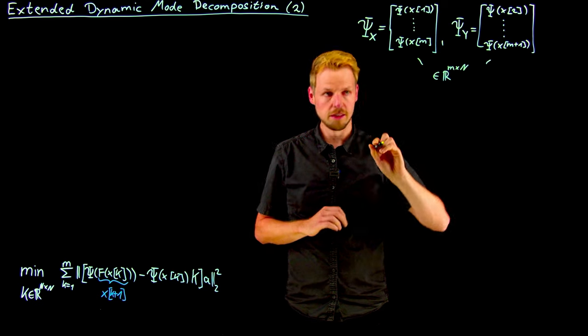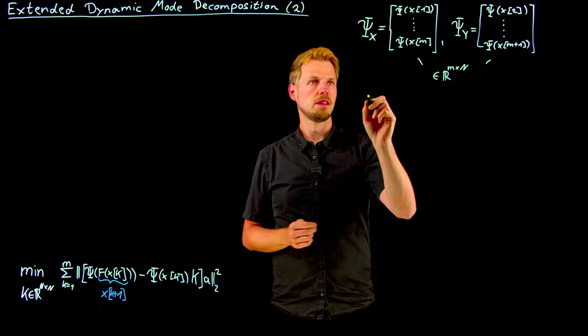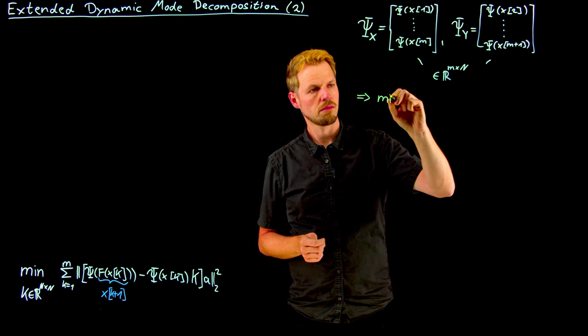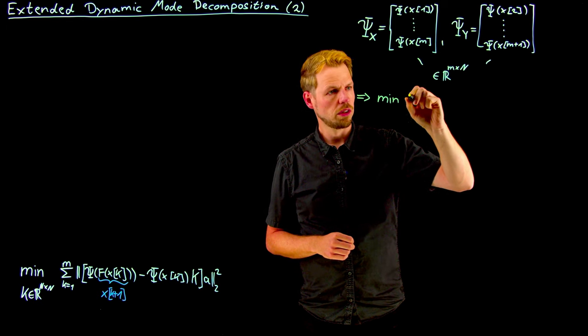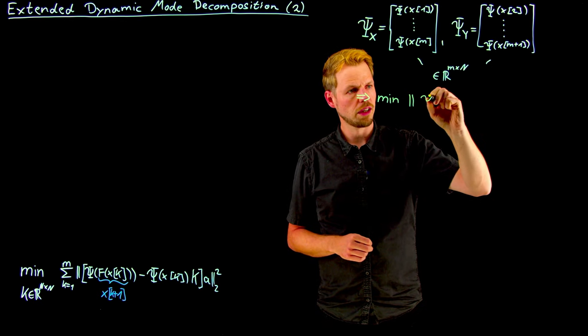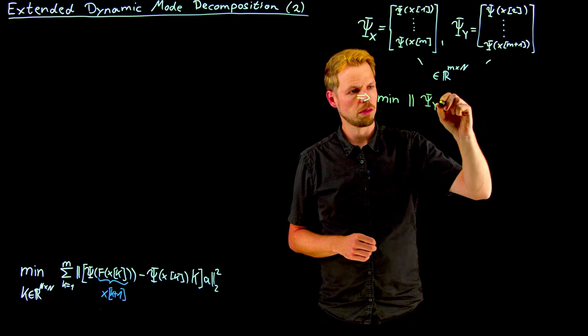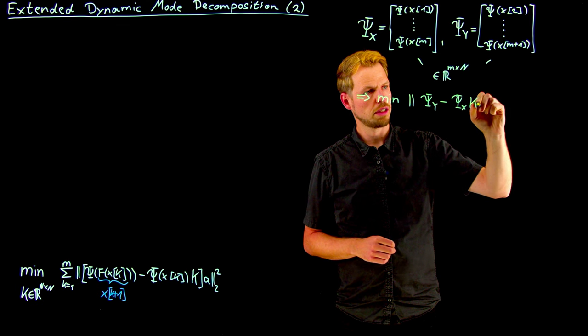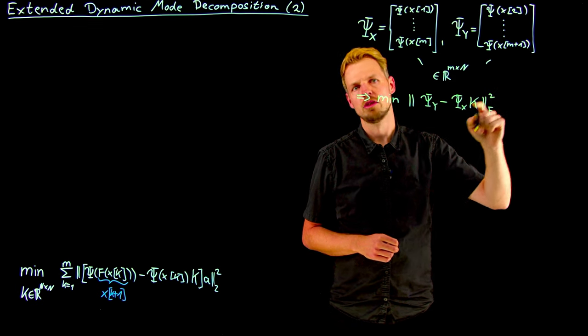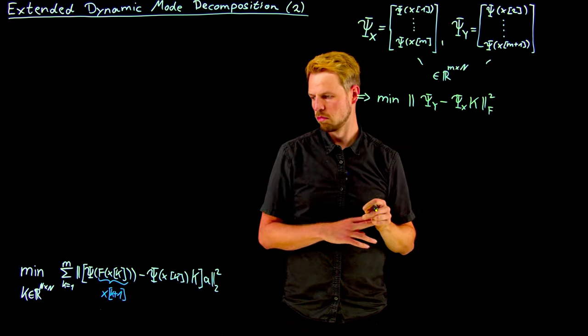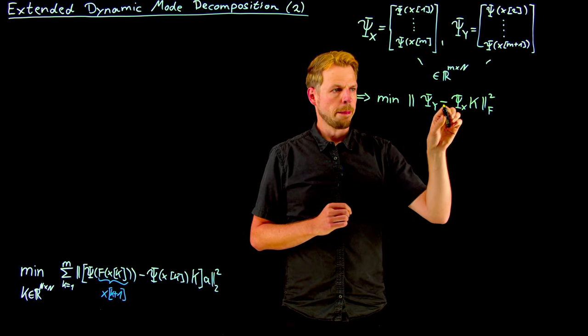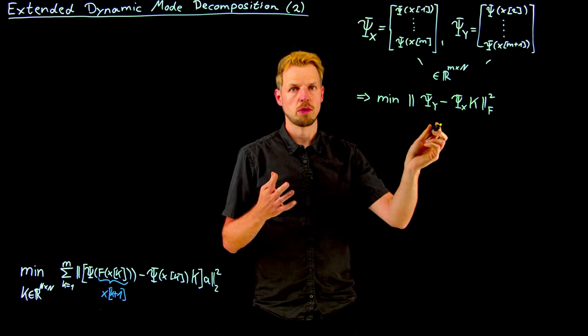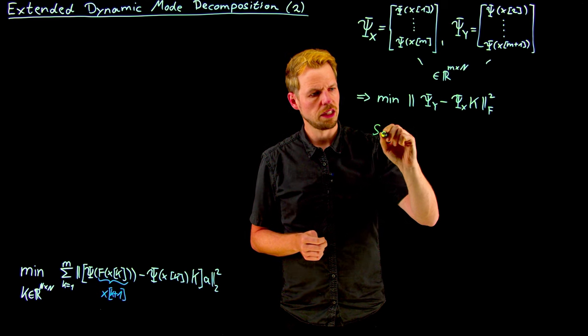And so what we can see is that this optimization problem is actually further simplified by using the Frobenius norm. So what we get is this psi y matrix minus psi x matrix multiplied by this k operator. And Frobenius norm just means summing over all the entries. So now we have written a problem that is very concise and easy to solve because it's rather well known how to do this in linear optimization.